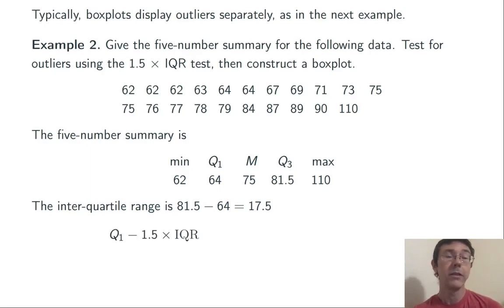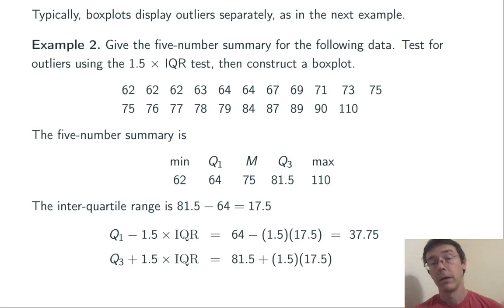We then take one and a half of those IQRs and subtract from Q1, so 64 minus 1.5 times 17.5, and get 37.5. And then we add that same amount to Q3, Q3 plus 1.5 times IQR. And in this case, we get 107.75.